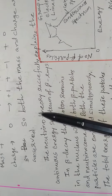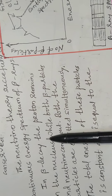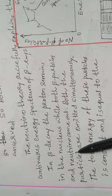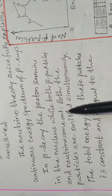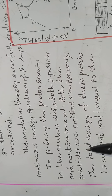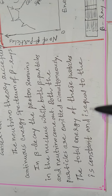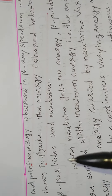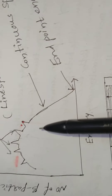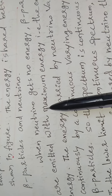The Neutrino hypothesis successfully explains the continuous energy spectrum of beta rays. In beta decay, the proton remains in the nucleus while both the beta particle and the Neutrino come out from the nucleus simultaneously when the Neutron converts into a proton. The total energy of these particles is constant and is equal to the endpoint energy observed in the beta ray spectrum. This results in a continuous spectrum.